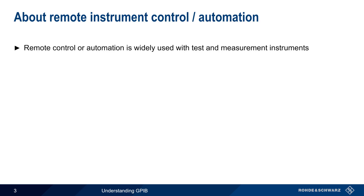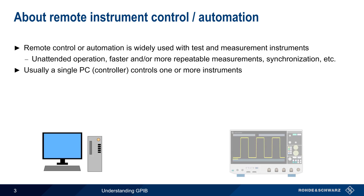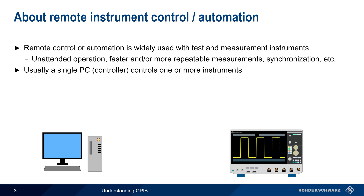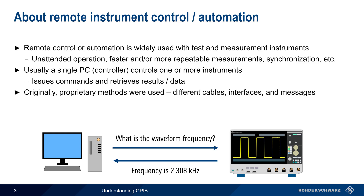Remote control or automation of test and measurement instruments such as spectrum analyzers or oscilloscopes is widely used because it provides numerous advantages such as unattended operation, faster and more repeatable measurements, synchronization between multiple instruments and other devices, etc. In most cases a single PC acts as a controller that controls one or more instruments by issuing commands and receiving results or data. In the early days of electronic test and measurement, this remote control was often carried out using non-standard or proprietary cables, connectors, interfaces and messages.